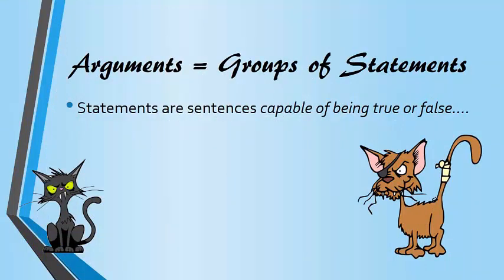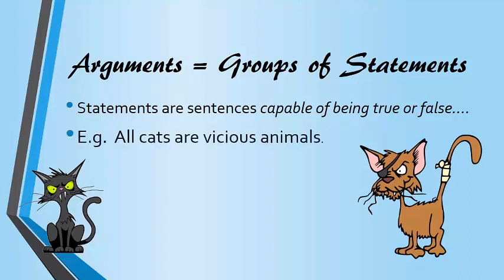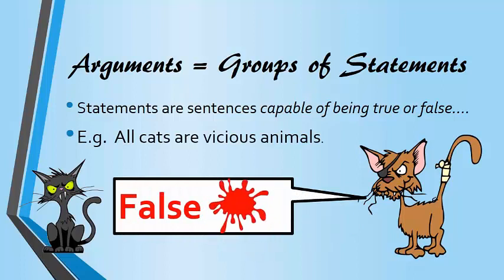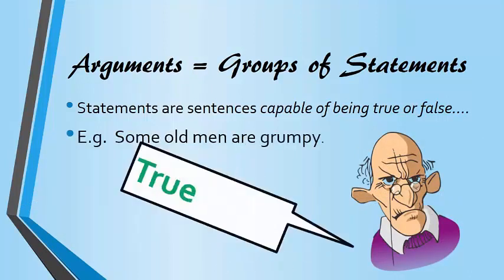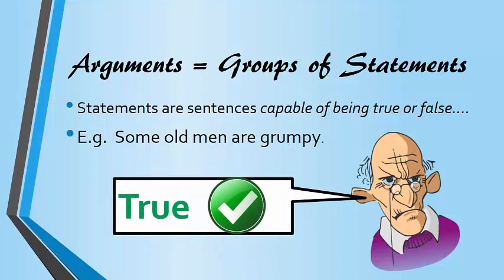Now that we've defined the term argument, it's time to move on and define statements in more detail. Statements are sentences capable of being true or false. For example, if all cats are said to be vicious, that statement would be false — but notice we have a sentence here capable of taking a truth value. Similarly, somebody might say that some old men are grumpy, and that sentence is more than likely true. But again, statements are a unique type of sentence.